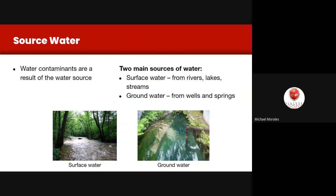Groundwater — from underground water tables, wells, and springs — has different characteristics. It is not high in living organisms like bacteria, fungi, or algae, because when rain hits the earth and permeates through dirt, gravel, rocks, and clay, those materials filter out sediment and microbial and organic loads. So groundwater will be lower in organics but higher in mineral elements from whatever the water passed through to reach that table or spring.